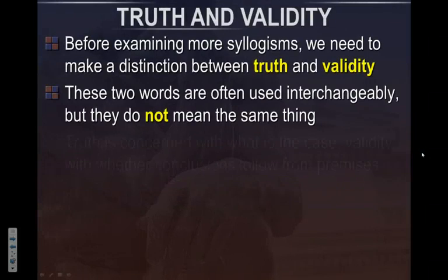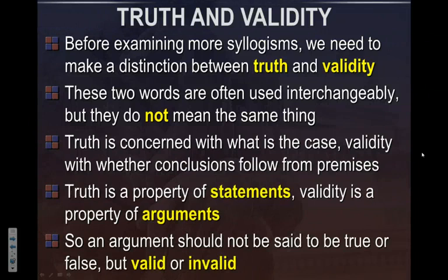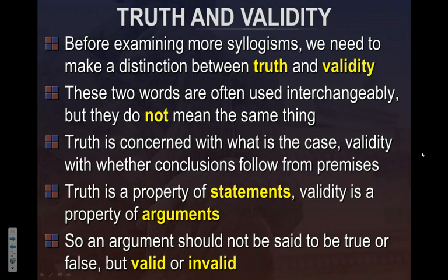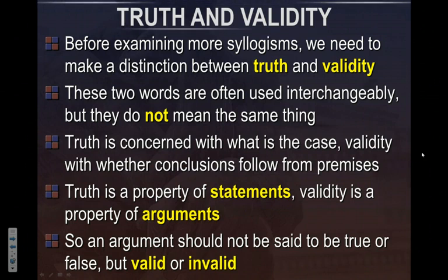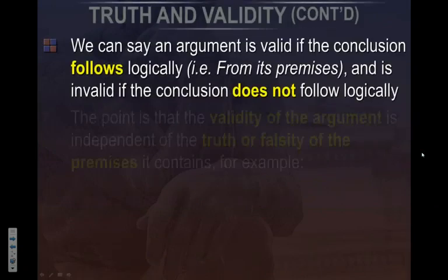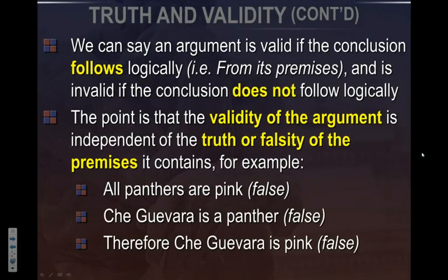Let's talk about truth and validity — they don't mean the same thing. Truth is concerned with what is the case, and validity is essentially whether the conclusions follow from the premises. Validity relates directly to a syllogism. Just because something is valid doesn't mean it's true. An argument can be said to be either valid or invalid, and the statements within the argument can be true or false. An argument can be valid but false.